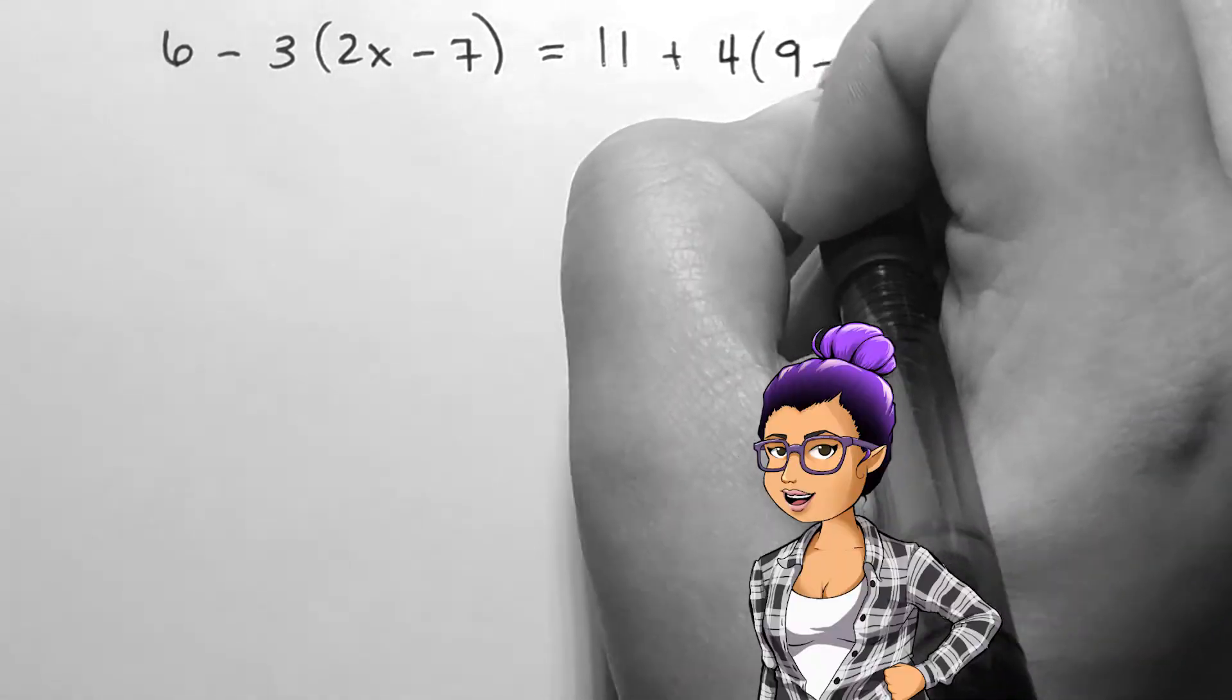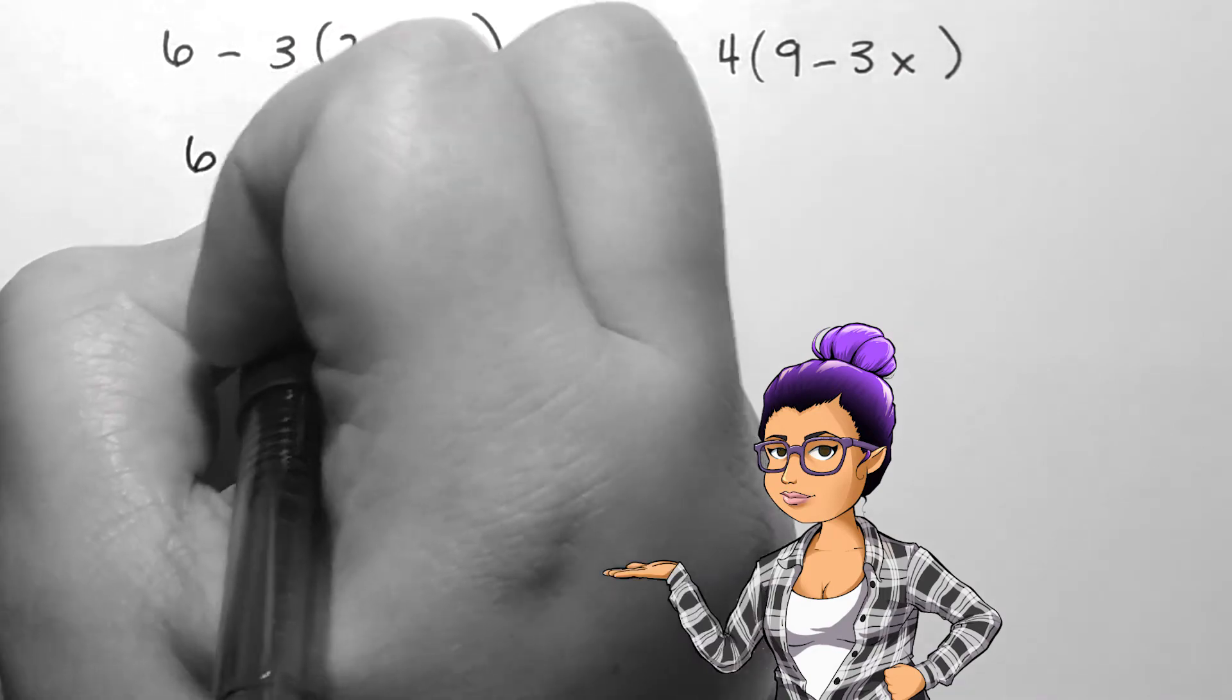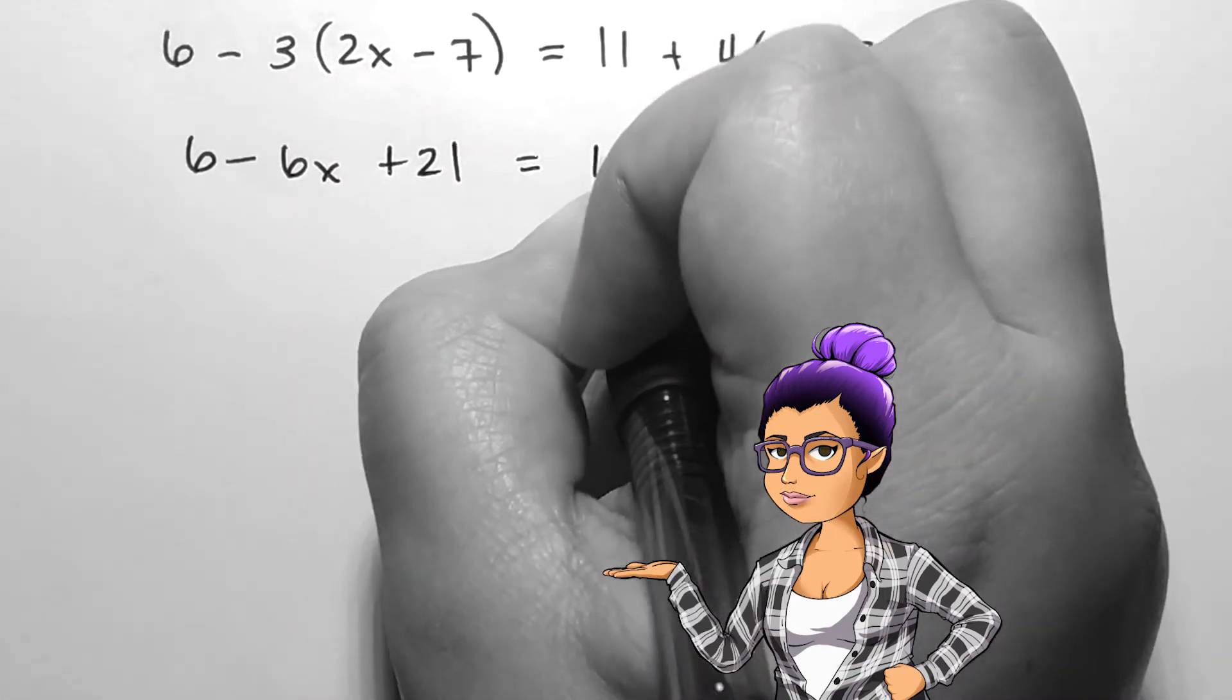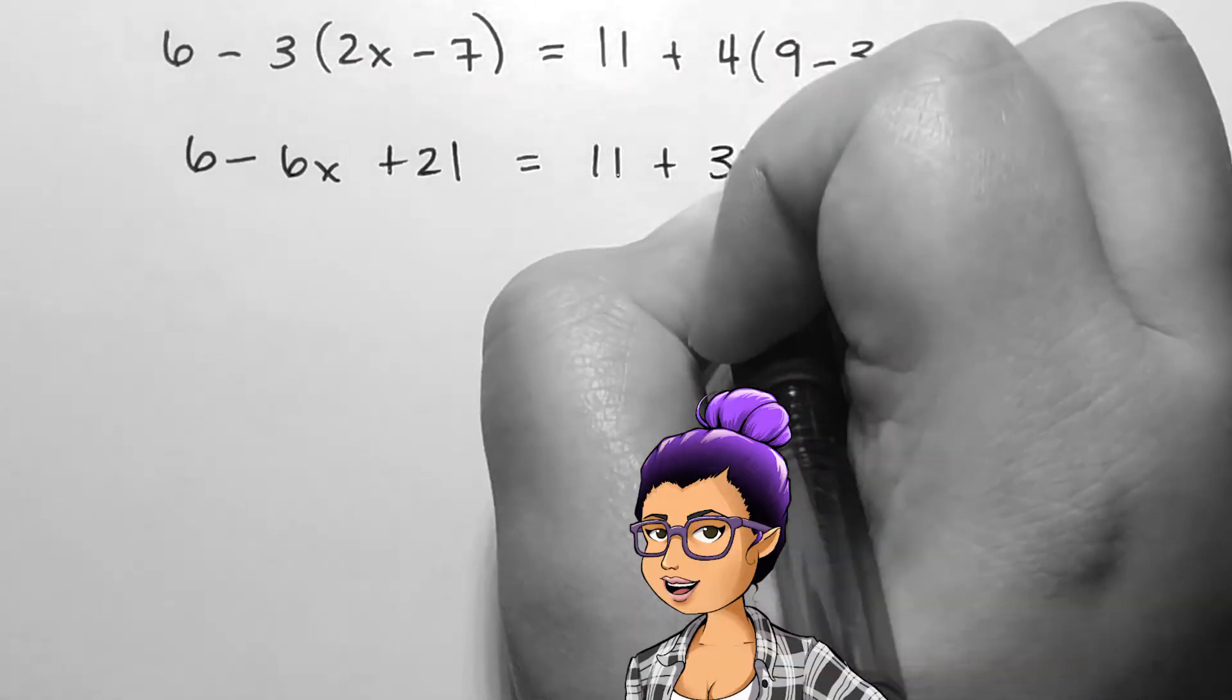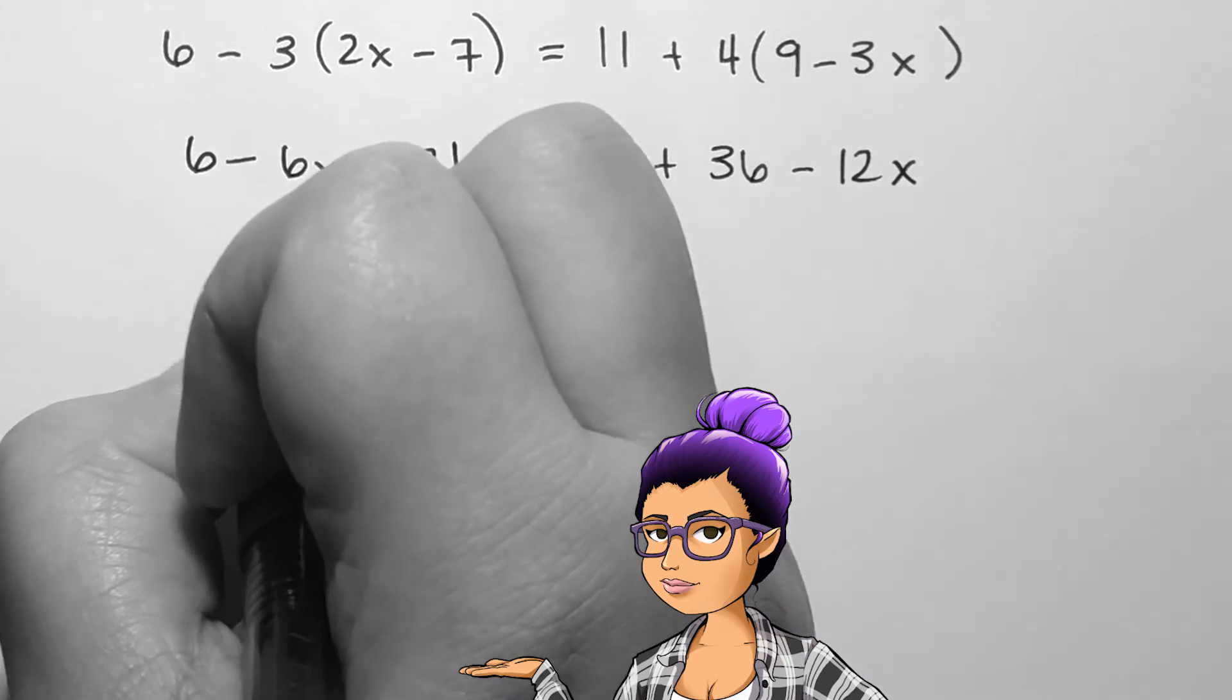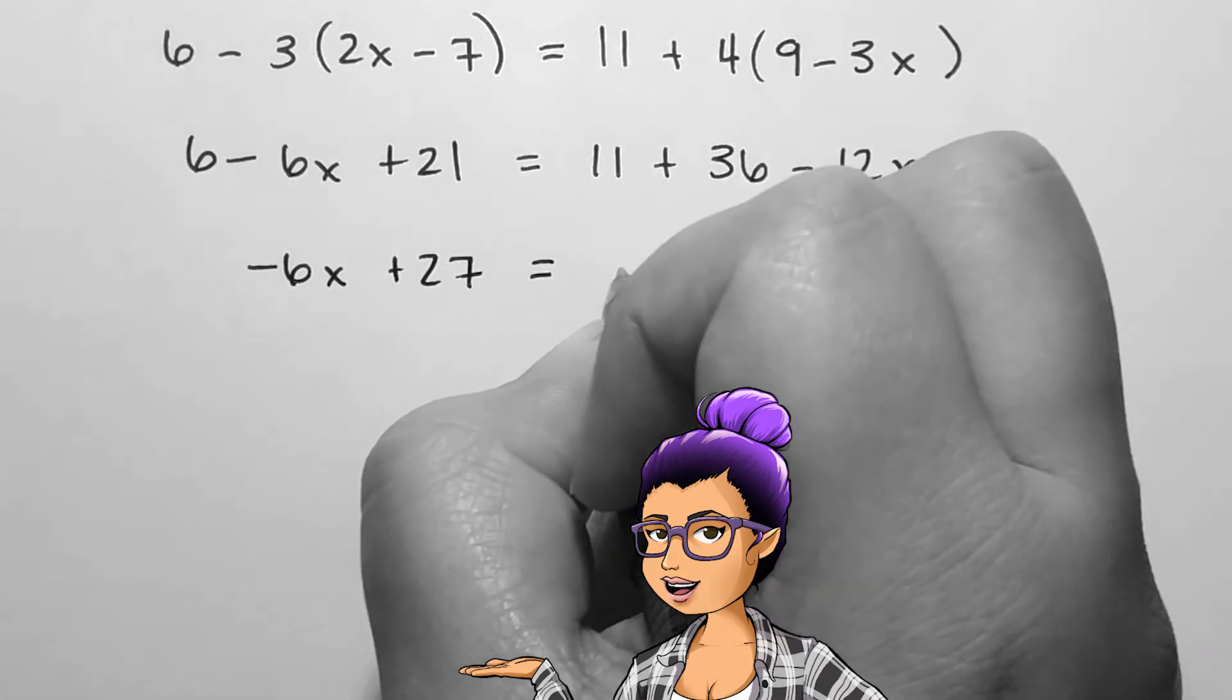Distributing on the left-hand side of the equation will give me 6 minus 6x plus 21. Distributing on the right-hand side of the equation will give me 11 plus 36 minus 12x. When I combine like terms on both sides, my equation says negative 6x plus 27 equals negative 12x plus 47.